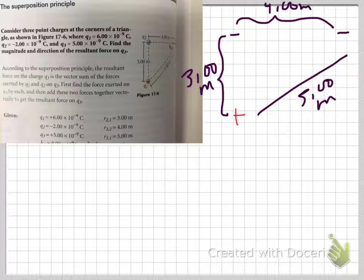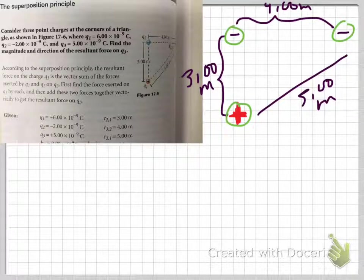What we're told is that we have three charges arranged as such. We have a little positive there, a little negative there, a little negative there, and we're given distances in between them: 3.0 meters, 4.0 meters, and 5.0 meters. We're being asked to find the charge on Q3.